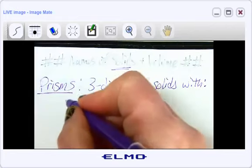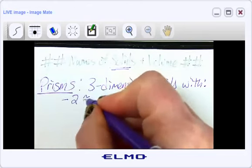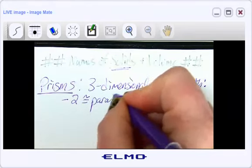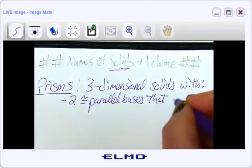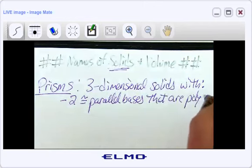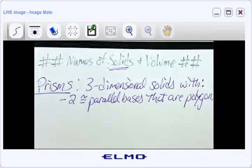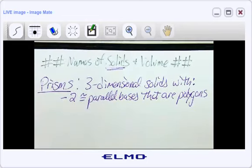They're going to have two congruent parallel bases that are polygons. So you're going to have two sides of this shape that are parallel to each other. And if you look straight on at it, it would be some polygon. So it could be a rectangle or a hexagon or an octagon or a triangle. But it's not going to be a circle. It's not going to be an oval. It's got to be some sort of a polygon.